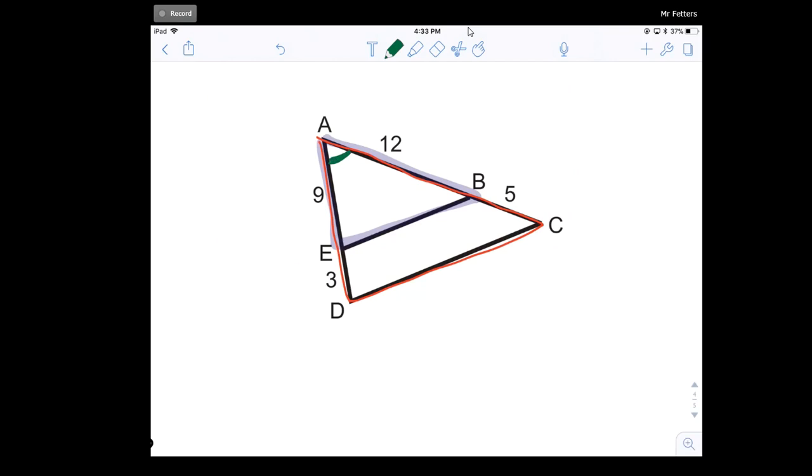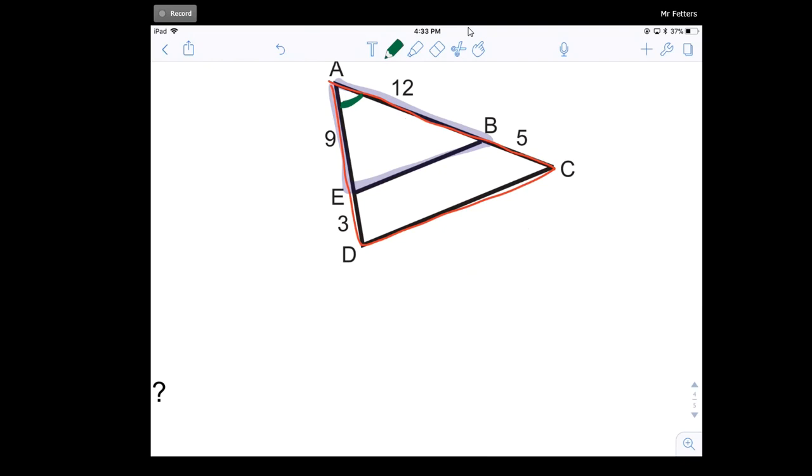So the question is, are those two triangles in proportion? So I have side AE, that would correspond to side AD of the one triangle. Is that in the same proportion as side AB, which corresponds with side AC?